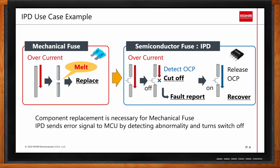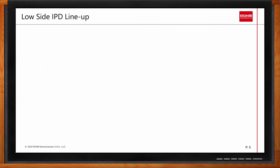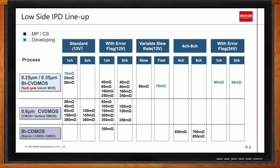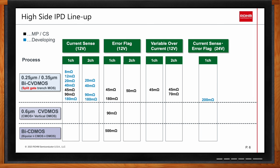IPDs are separated into two different groups: low side IPD and high side IPD. For the low side IPD product offering, features include adjustable slew rate control and diagnostic functions. Rohm has an in-house dedicated process technology for IPD products, ranging from conventional BCD-MOS process to the latest vertical trench MOSFET process technology. With these in-house fabs, Rohm offers IPDs with on-resistance of the integrated switch ranging from as low as 10 milliohms to several hundred milliohms.